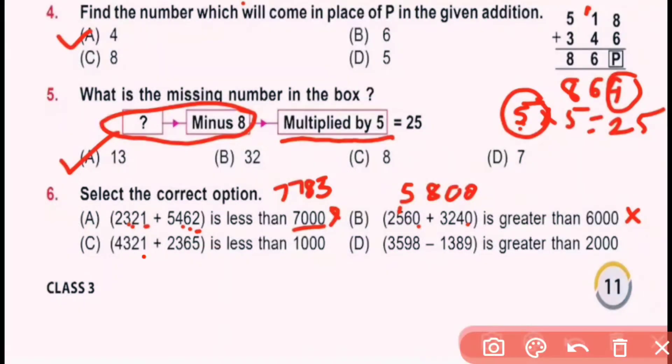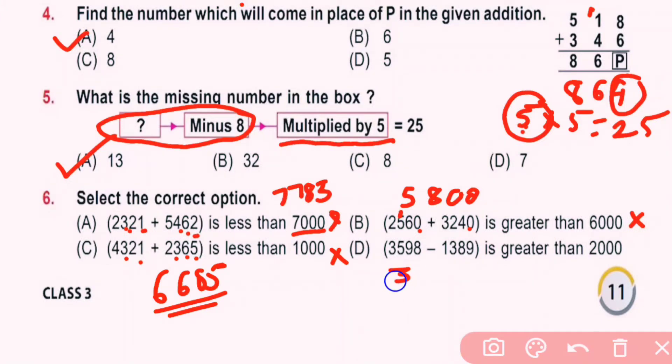Option C here: 1 plus 5 is 6, 2 plus 6 is 8, 3 plus 3 is 6, and 4 plus 2 is 6. 6686 is greater than 1000, so this statement is also incorrect. Here 3598 minus 1389. Here 8 is smaller than 9, so here 18 and here 8. 18 minus 9 is 9, 8 minus 8 is 0, 5 minus 3 is 2, and 3 minus 1 is 2. 2209 greater than 2000. This option is correct option. So D is correct answer.